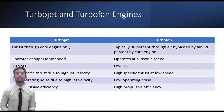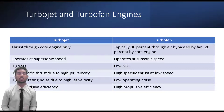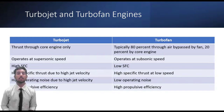Gas turbine engines are of four types, but for VCEs we need to know about only two: turbojet and turbofan. A turbojet is a jet engine in which a turbine drives compression of incoming air into a combustion chamber, into which fuel is injected. Combustion causes the gas to expand and rush first through the turbine and then through a nozzle at the rear. Forward thrust is generated as a reaction to the rearward movement of the exhaust gas. Turbojets have poor efficiency at low speed, which limits their usefulness in vehicles other than aircraft.